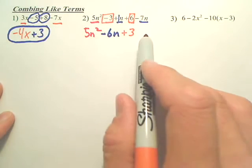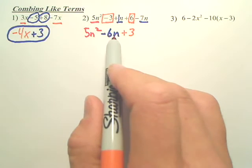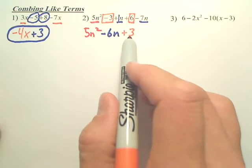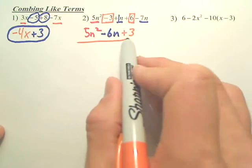None of these can combine because these are N's squared. Think of them as squares. These are N's. And these are 3's, numbers. You cannot combine those. We are simplified.